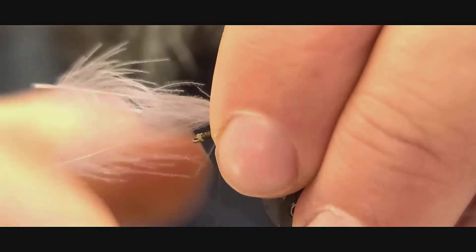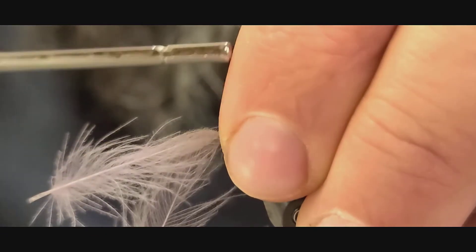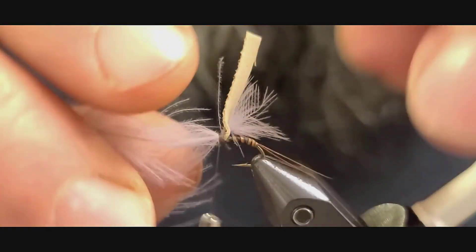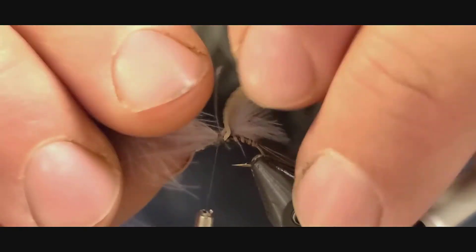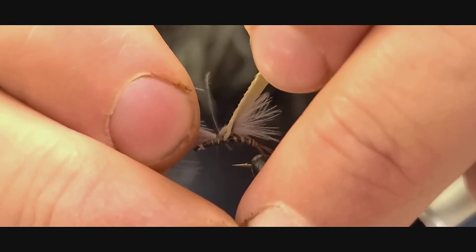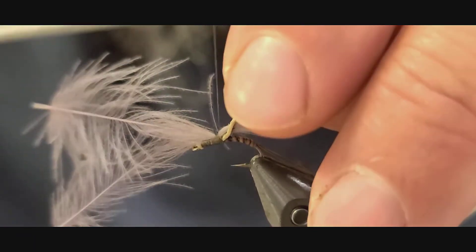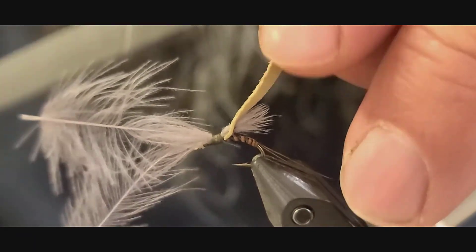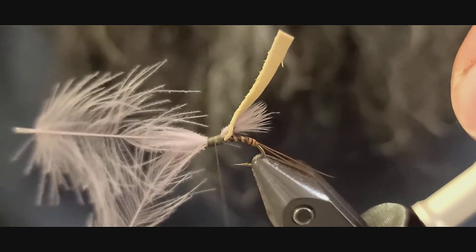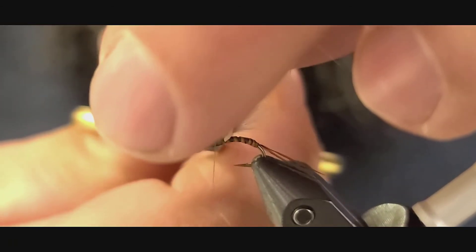You want to leave a half inch or so out. You can actually take just a couple loose wraps here and secure those in. Then once you've got a couple of wraps of thread you can go ahead and finish pulling them the rest of the way down and secure them in good here. Go ahead and clip these off.